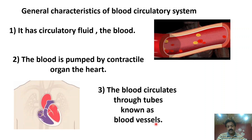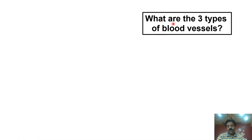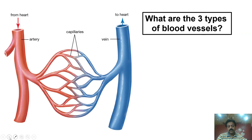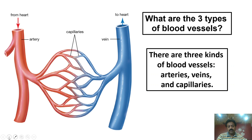What are the three types of blood vessels? If you look at this image, you will see three types of blood vessels. There are three kinds: arteries, veins, and blood capillaries.